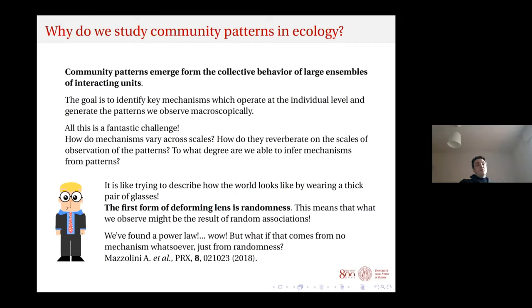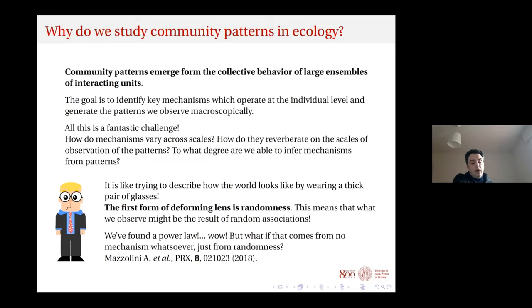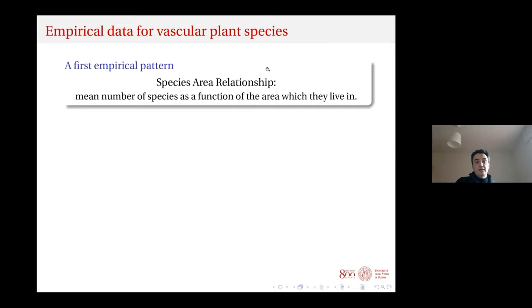How do we address this? The idea is to build null models. These null models are informative when they fail — when they fail, it suggests there is an underlying mechanism driving the pattern. This tells us whether there are specific architectural features in our patterns. Let me now move to the first pattern, which is probably well-known to many of you: the species-area relationship.